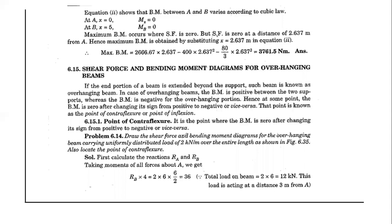In overhanging beams, we will act on UDL and point loads. Before starting the analysis, I will discuss the point of contraflexure. The point of contraflexure is the point where bending moment is zero after changing its sign from positive to negative or vice versa.